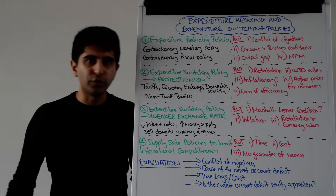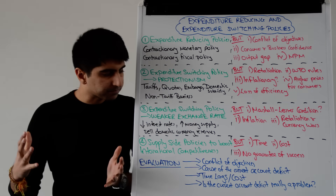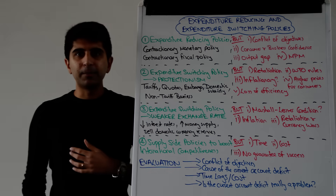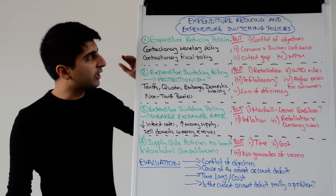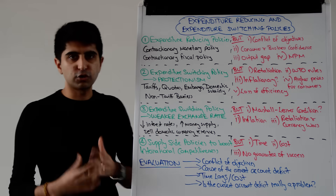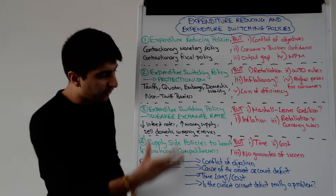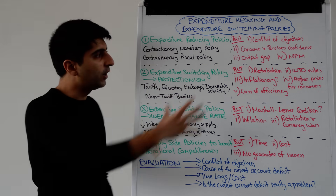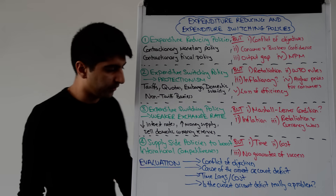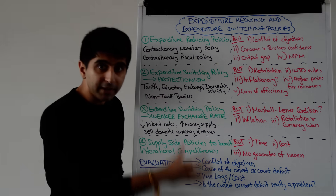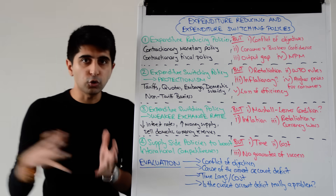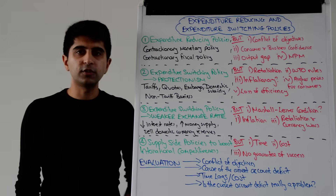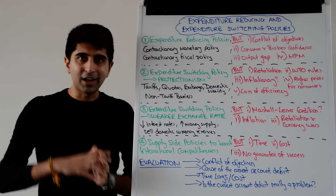Always consider the cause of the current account deficit. There are some causes which require very specific policies. There is no point using expenditure reducing policies like contractionary monetary and fiscal policy if you have competitiveness issues at the root of the problem. So the cause of the deficit is important to know in order to target the solution using the correct policy. Consider the time lags involved — if we need short-term solutions, then expenditure reducing policies are better; if there are long-run issues, then we need policies to overcome that.